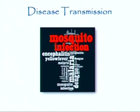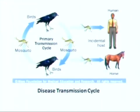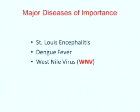It only takes seven to ten days to complete an entire life cycle. Mosquitoes bite a bird that is a carrier, and then they bite a human as an incidental host. Humans are not necessarily the primary favorite meal for a mosquito. The major diseases of importance that we test for include St. Louis encephalitis, dengue fever, and, of course, the West Nile virus.